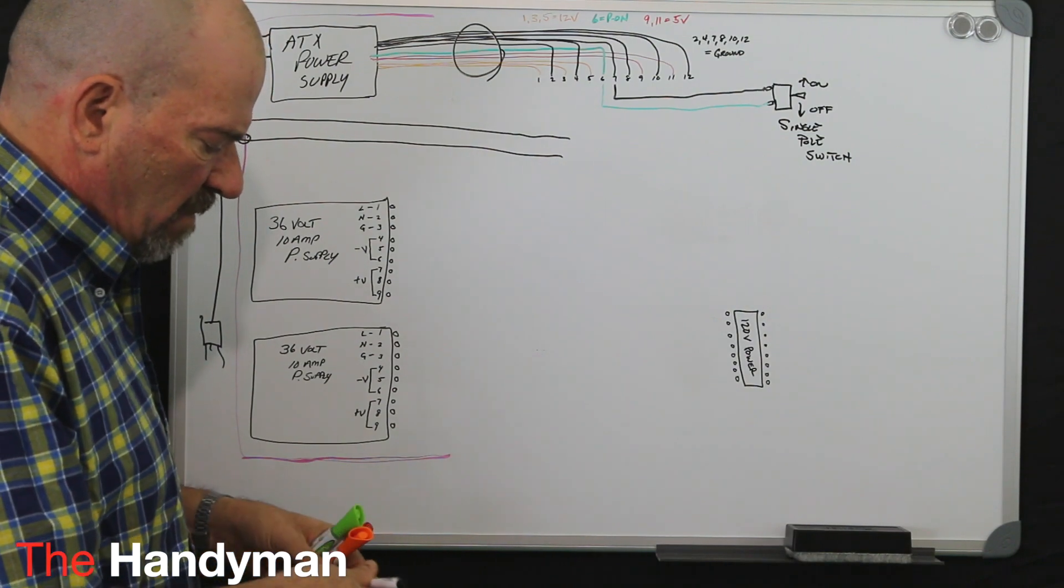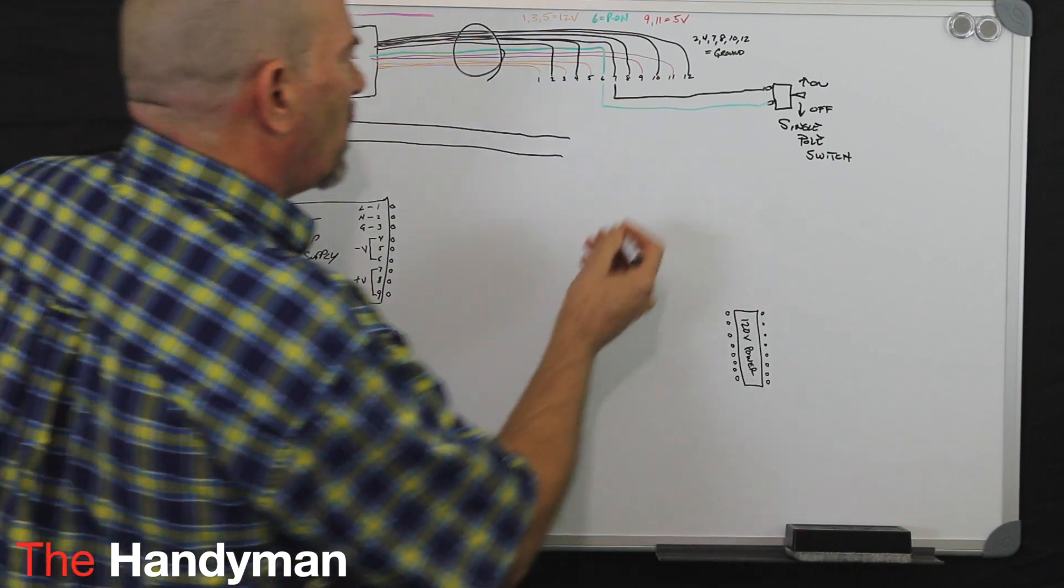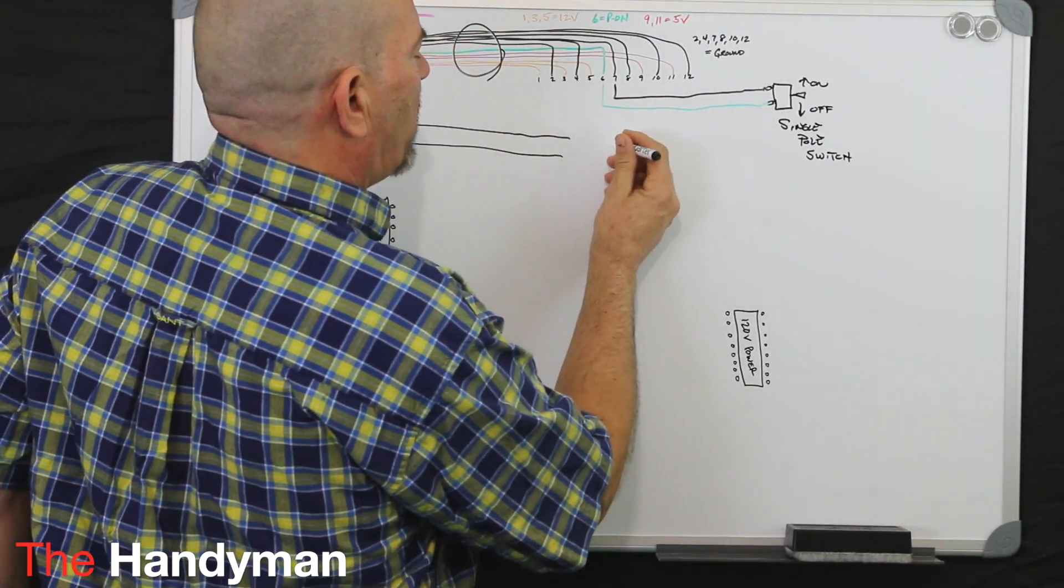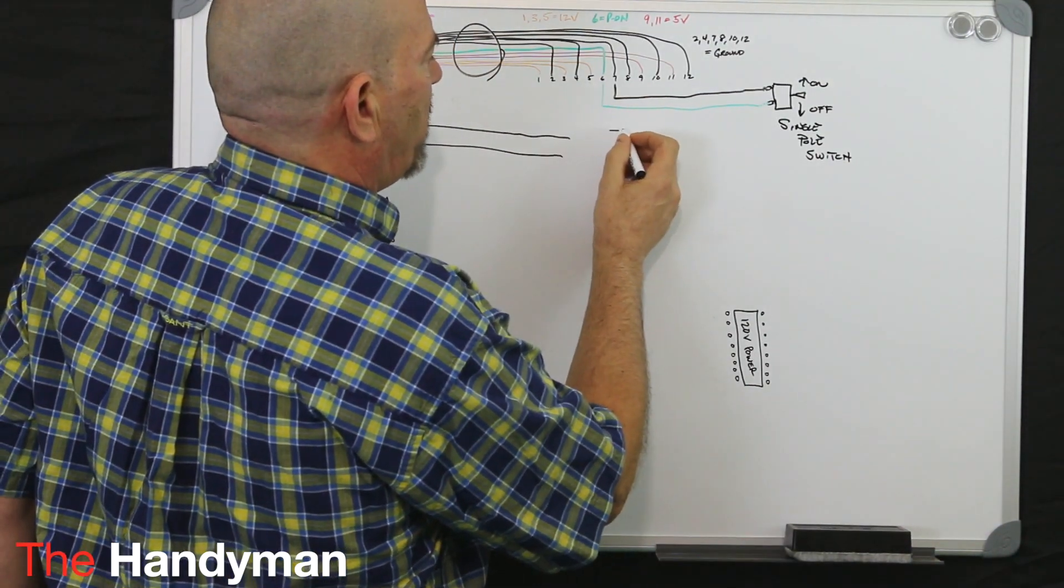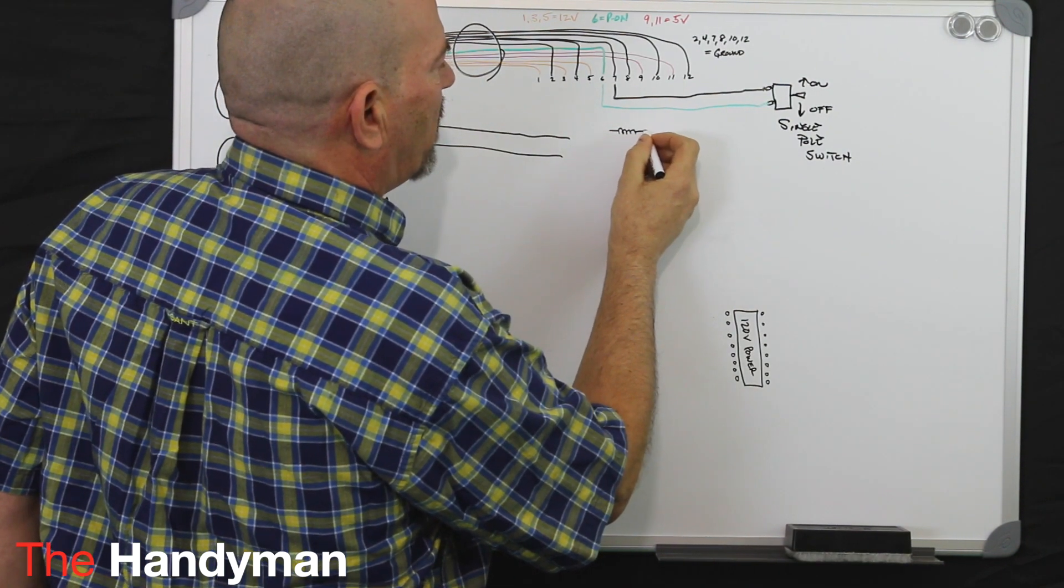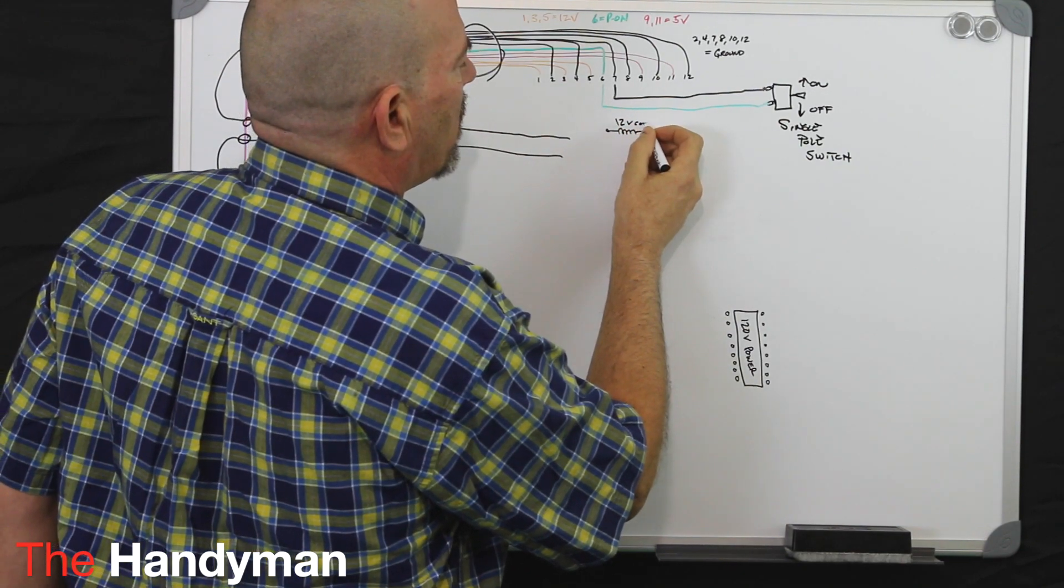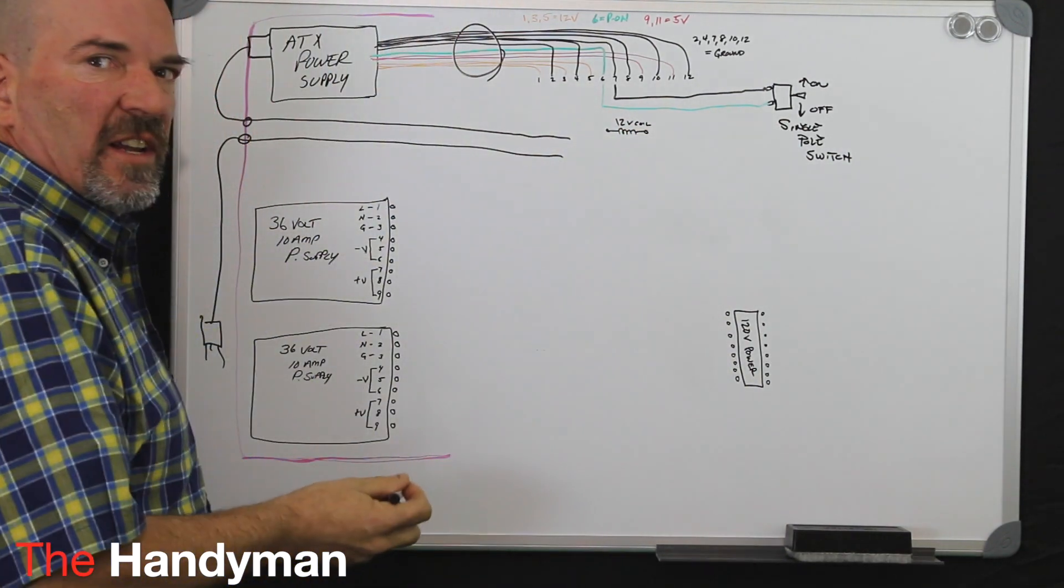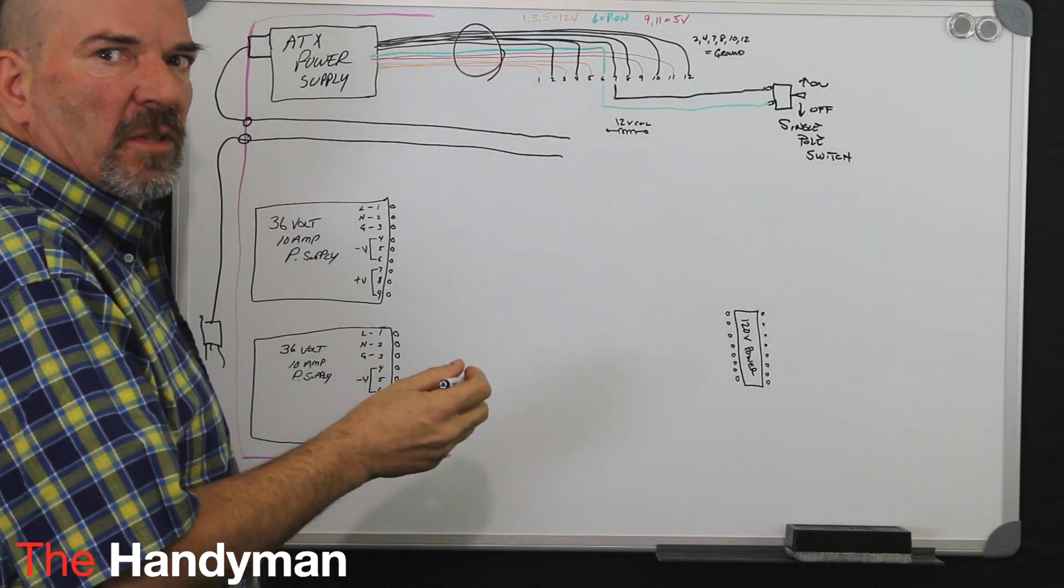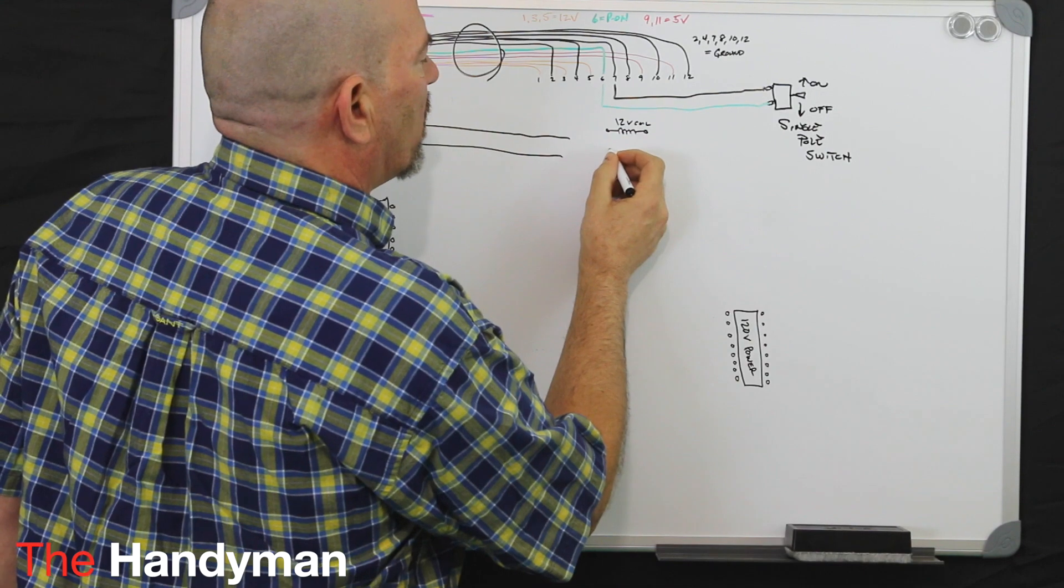So on your relay, you're going to have a series of contact points. So I'm going to represent the first one as my coil, 12-volt. And then we're going to have our normally open and normally closed contacts.